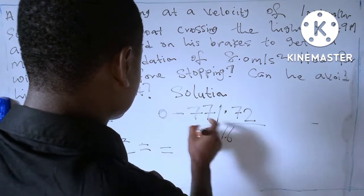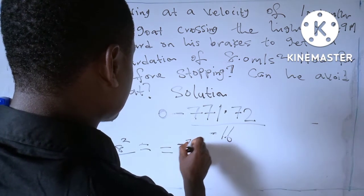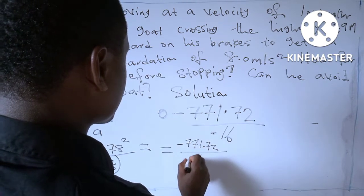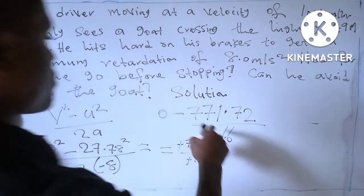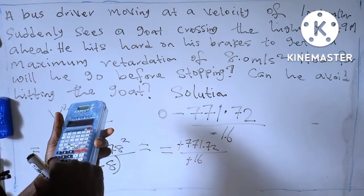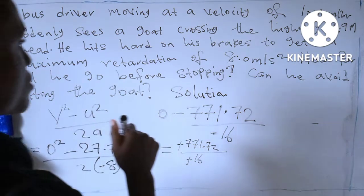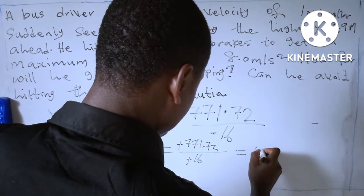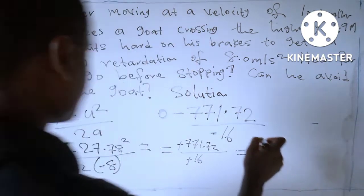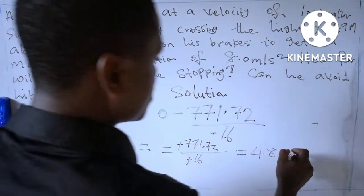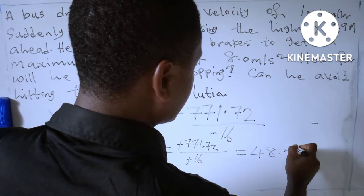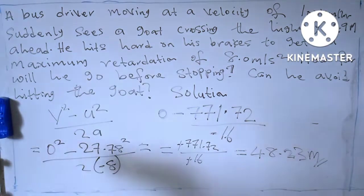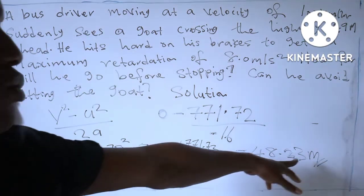So we have negative 771.72 over negative 16. The two negatives cancel, giving us 771.72 divided by 16, which equals 48.23 meters. So the answer is 48.23 meters.